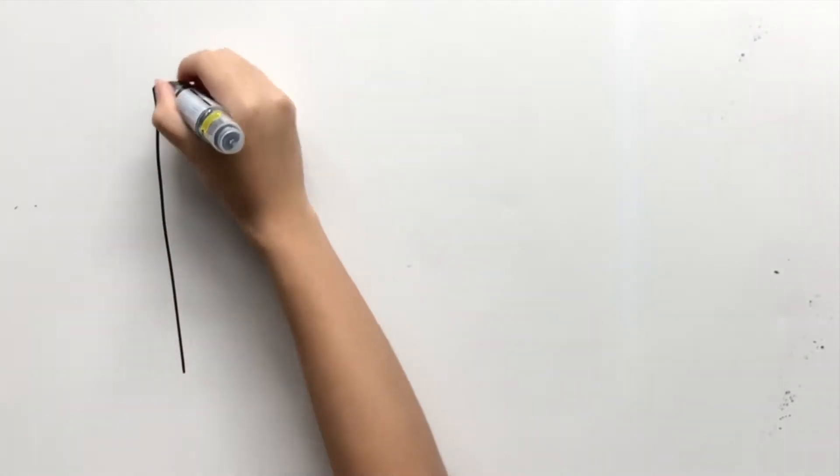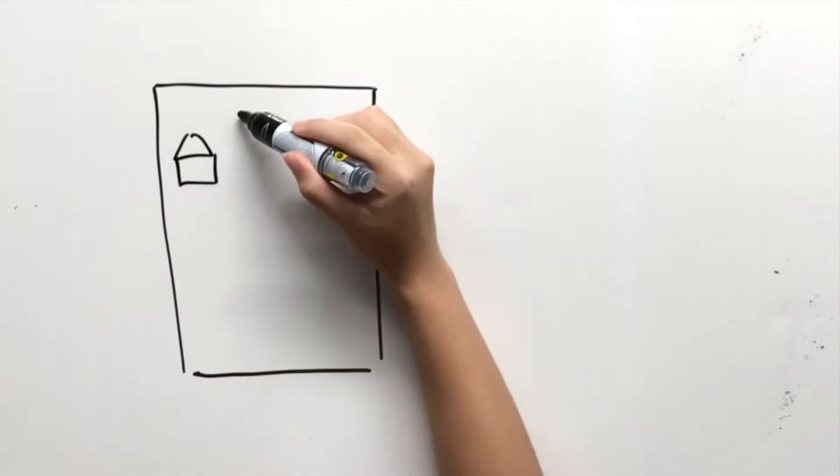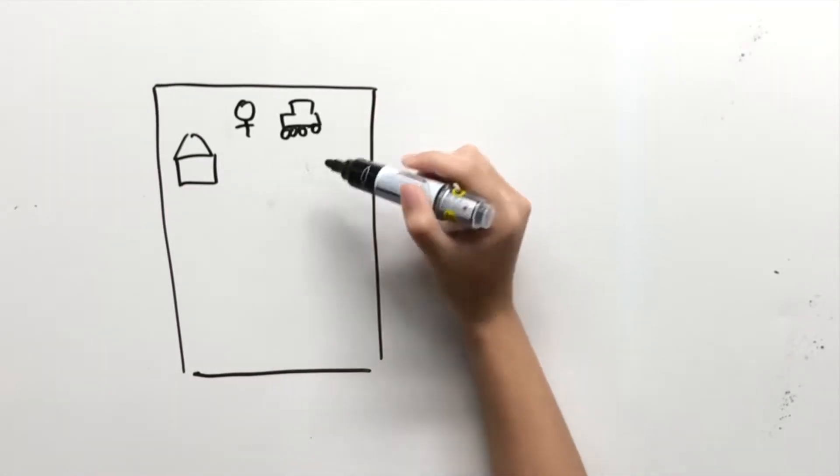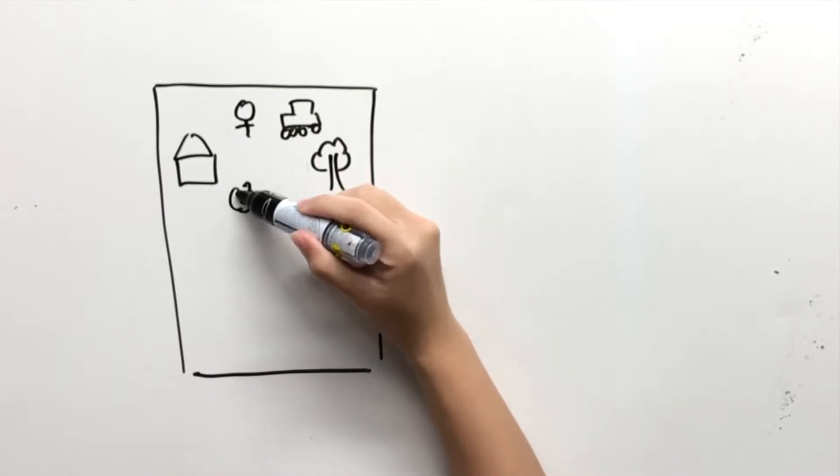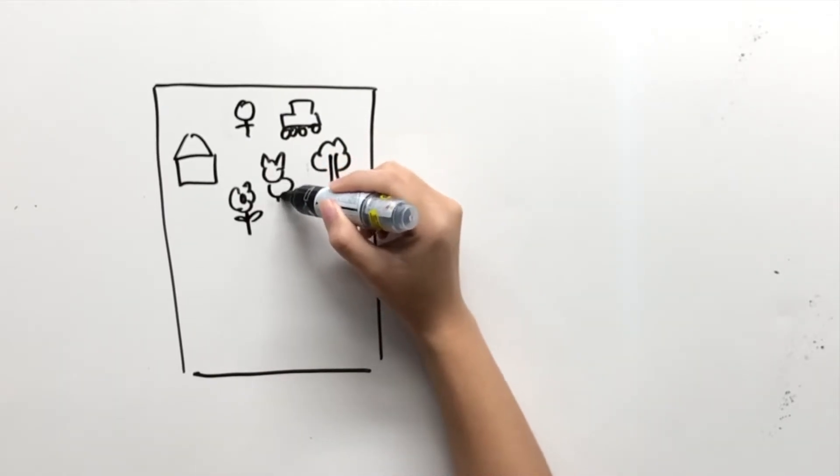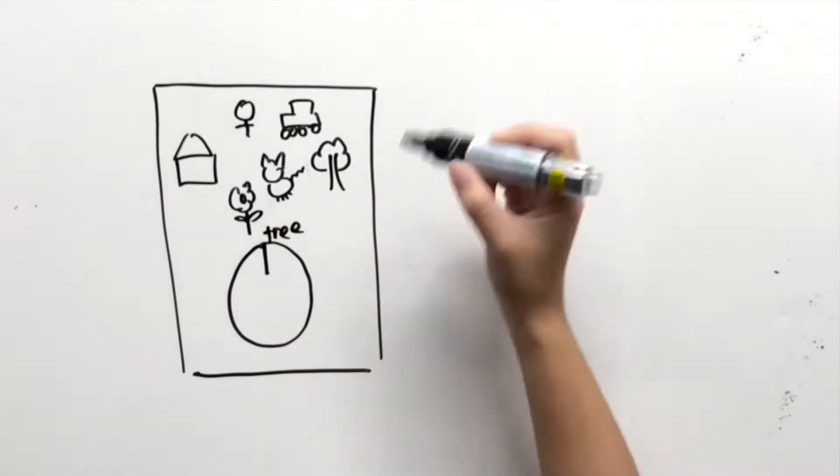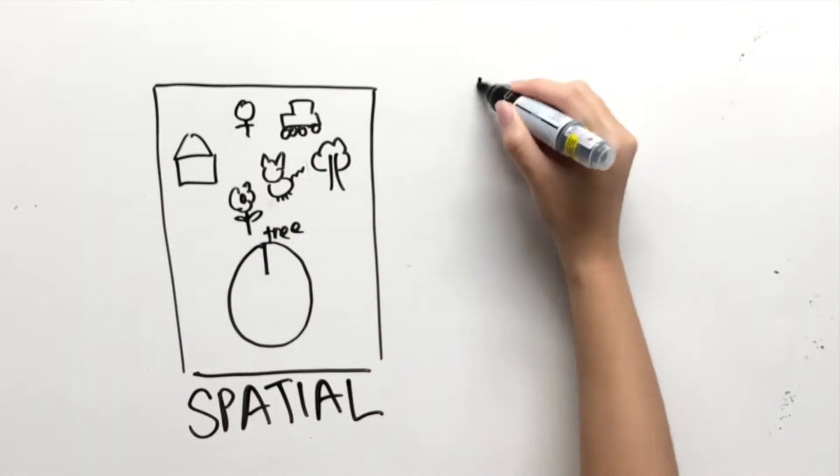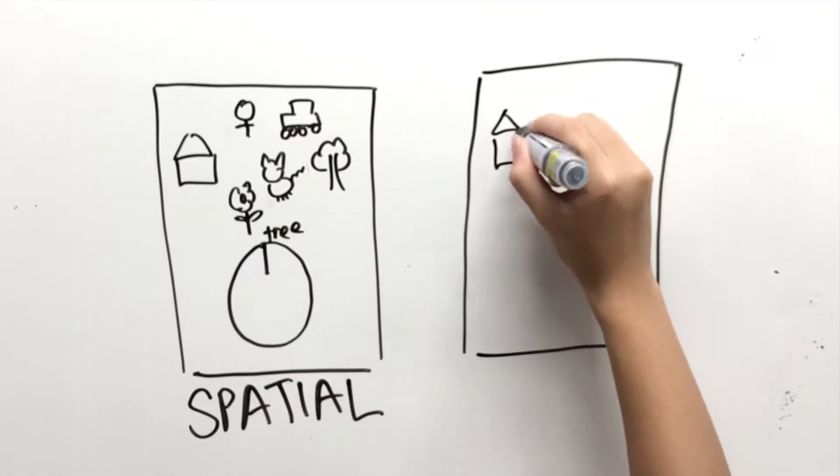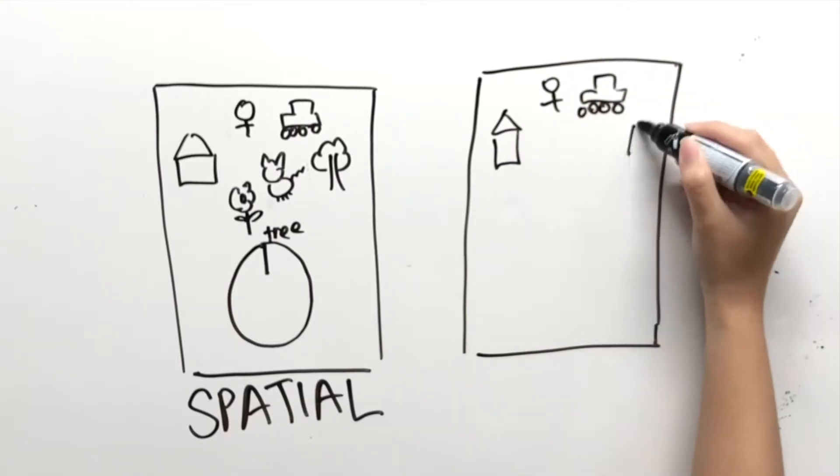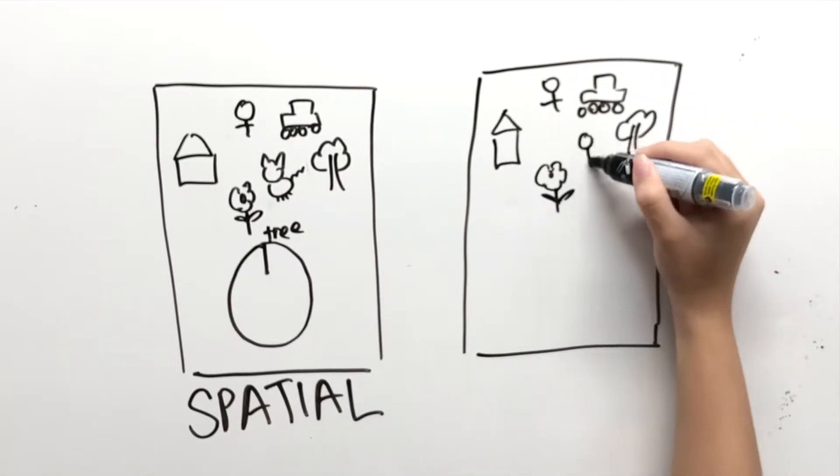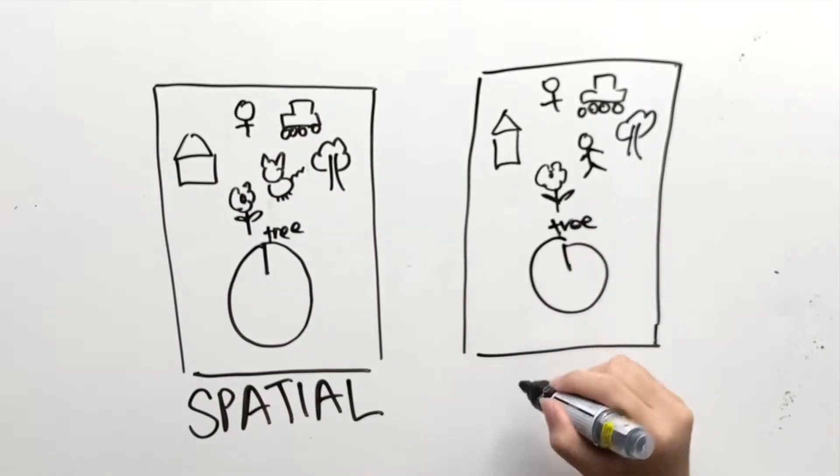Our second article talks about three experiments, but we will only focus on the first experiment. The experiment focuses on both spatial and social perspective-taking tasks. Participants were divided into males and females, then randomly assigned to either spatial condition tests or social condition tests.